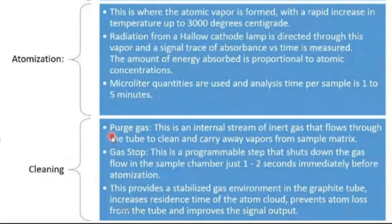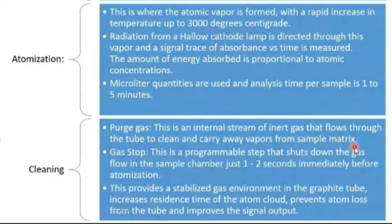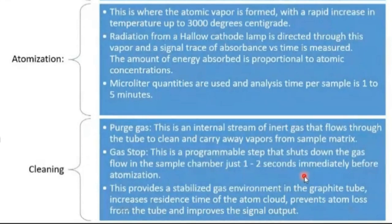For cleaning, a purge gas is used — an internal stream of inert gas (such as nitrogen) that flows through the tube to clean and carry away vapors from the sample matrix. Then there is a gas stop: a programmable step that shuts down the gas flow in the sample chamber just one to two seconds immediately before atomization.